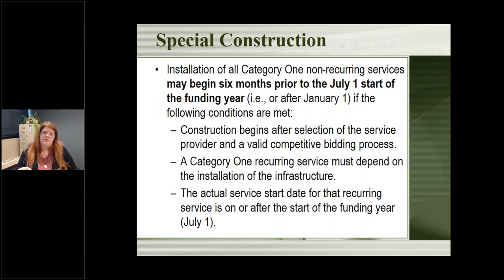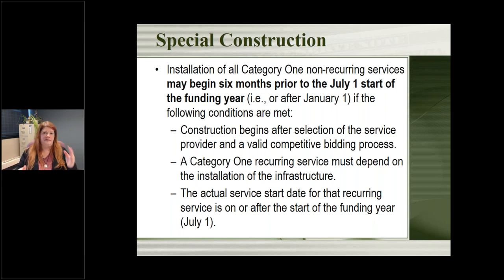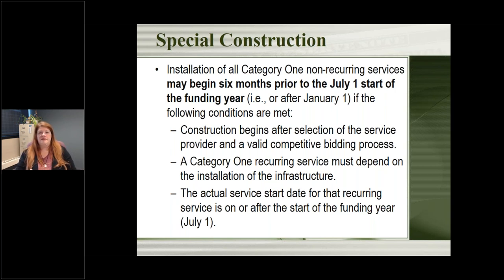Special construction might not fit neatly into the E-rate funding year, and USAC understands that. You can actually begin that construction work up to six months before the start of the funding year — so as early as January of a year for the following funding year, if necessary. So you can work with your service provider on timing, and even if work happens before July 1st going back to January of the same year, you still get your discount. Of course, you've got to follow through and use that service in the end.